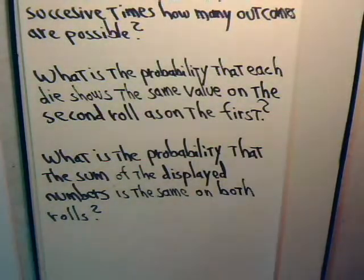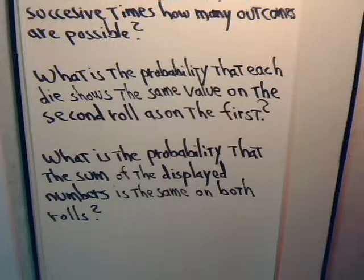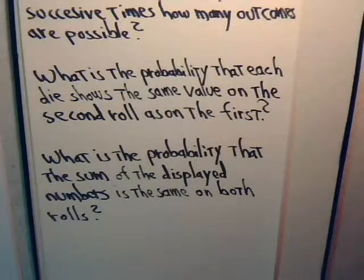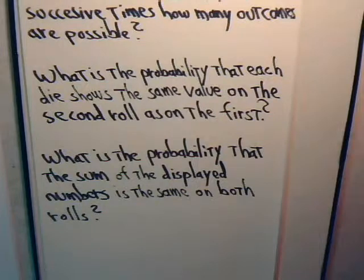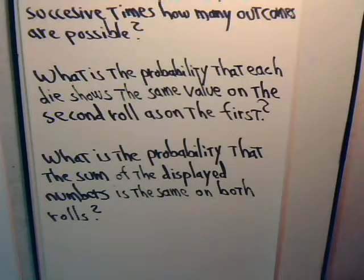For example, you take a pair of dice and throw them — you might get three and three, which add up to six. But the second time you might get different numbers, like two and four, whose sum again adds up to six. For that last question, we're asking: what is the probability that the numbers might be different but their sums are the same?